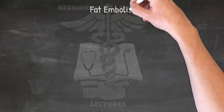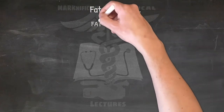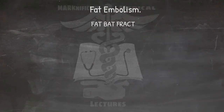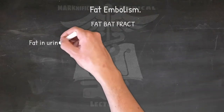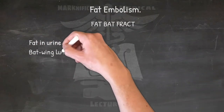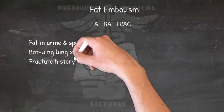Findings of fat embolism: FAT BAT FRACT — Fat in urine and sputum, Bat-wing lung X-ray, and Fracture history.